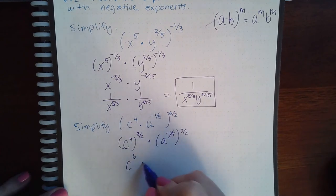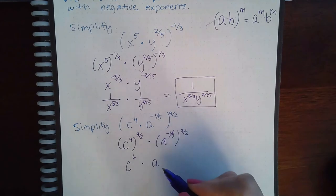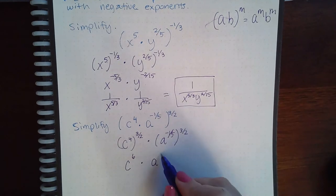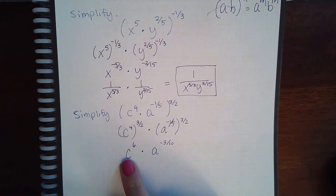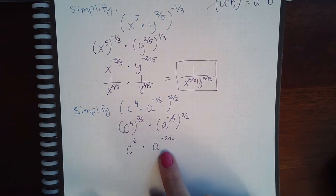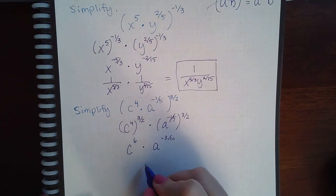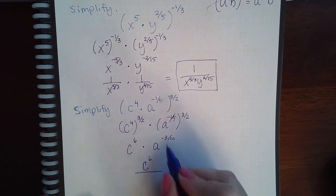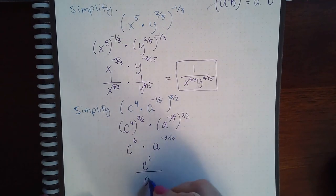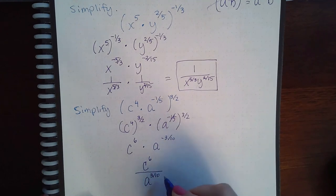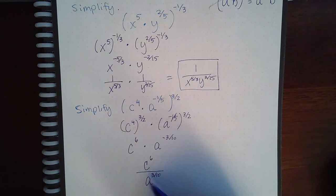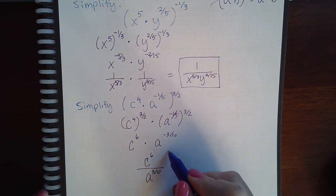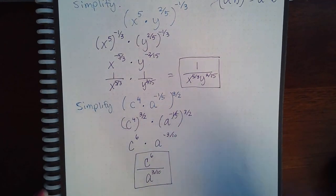And now one of these has a positive exponent and the other one has a negative exponent. So the one with the positive exponent will stay put but the one with the negative exponent will have to go to the denominator. So then now both of the exponents are positive and so this is my final answer.